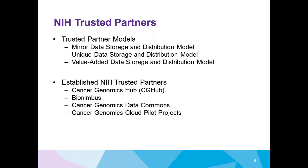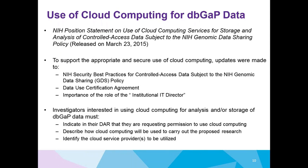All of the established trusted partners right now are through the National Cancer Institute, including CG Hub, BioNimbus, the Cancer Genomics Data Commons, and the Cancer Genomics Cloud Pilot Project. When DbGAP was first established, there wasn't much anticipation of the use of the cloud, but after the system was up and running, we started to receive a lot of input from the community — they didn't want to just download data on their servers because the data sets are becoming very large. So we worked closely together to develop a position statement on the use of cloud computing services on DbGAP data, updating a lot of documents and having many meetings to ensure the process would still protect the participants whose data was being accessed.